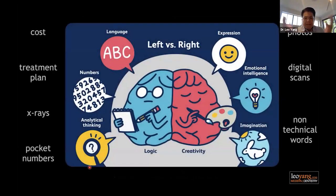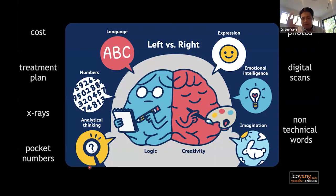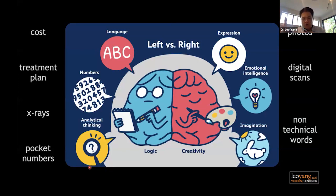What that means is you really have to think about the difference between left brain and right brain. Left brain is the logical side — languages, numbers, and analytical thinking. The creative part is your right brain — expression, emotion, intelligence, and imagination. Whenever we communicate with patients, we really need to talk to them on the right brain side. The tools we use to stay on the right brain side are showing photos of existing issues of teeth, or if you don't like photos, digital impressioning to walk them through.